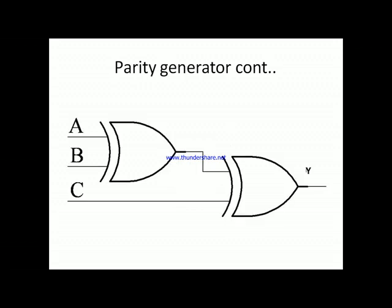Now we draw the logic diagram. An XOR gate takes inputs A and B. The output of that first XOR gate feeds into a second XOR gate along with input C. The output of the second XOR gate is Y, the parity bit. This completes the three-bit even parity generator.